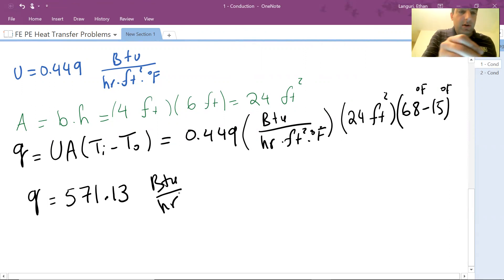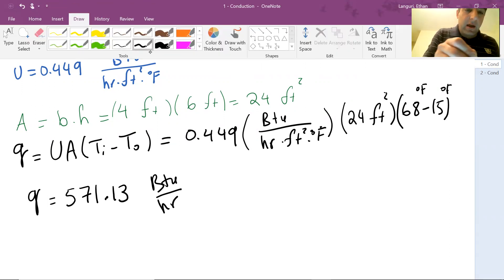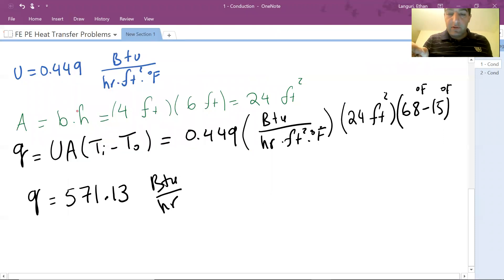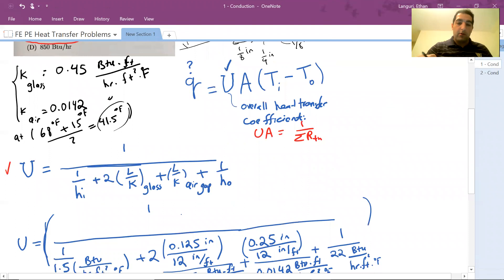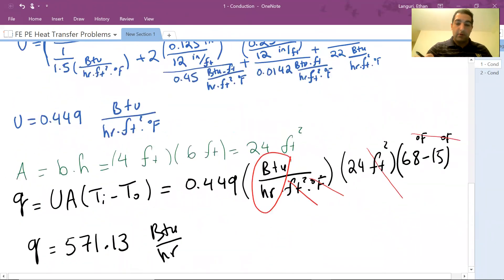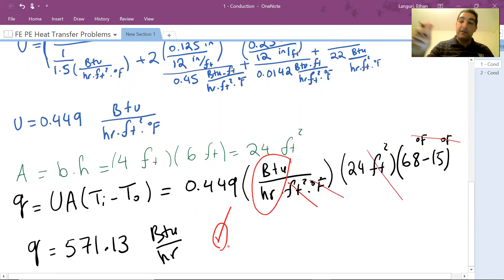So you can quickly double check your units since you have a unit. Let's do it quickly together. Foot squared and foot squared cancel out each other. Fahrenheit and Fahrenheit cancel out each other. All you have is BTU per hour, 571. So let's go back. 570 is very close. So the answer is part C. I go back to this in case you want to look at this. But this is my final answer. We'll stop here and we'll do more questions like this in next videos. Thanks.